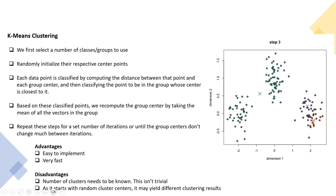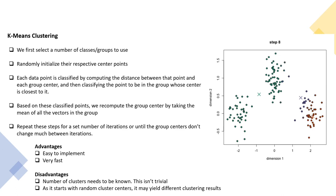We randomly initialize cluster centers and then in each iteration assign points to one cluster. For example, some points are in the red cluster, but as the cluster center moves, nearby points become red as well. In each iteration we recalculate the cluster center, and we stop when we can no longer move the cluster center or when the maximum iteration number is reached.